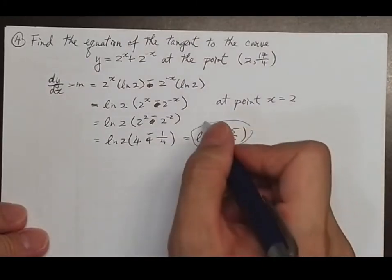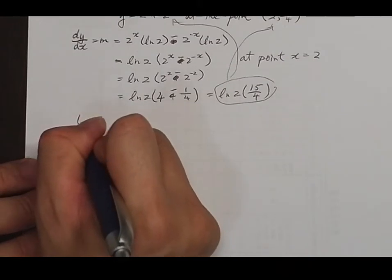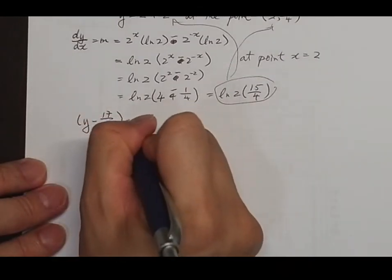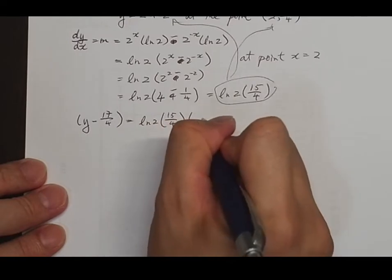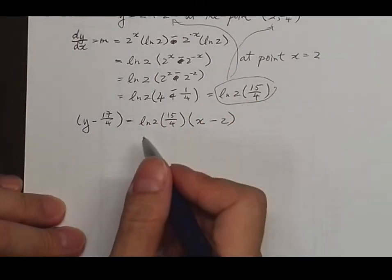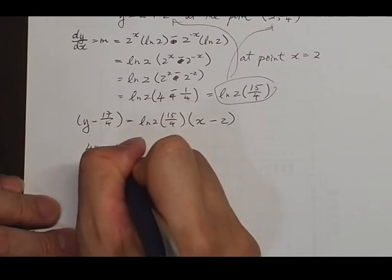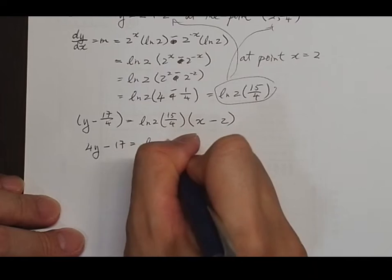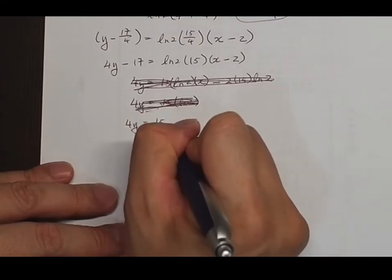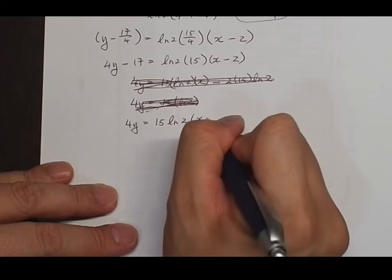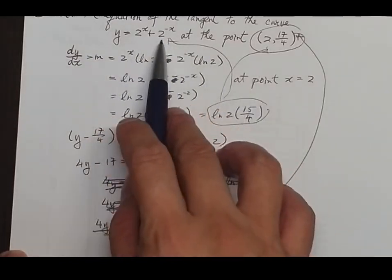Using the point-slope form, we get y minus 17/4 equals (log 2 · 15/4)(x minus 2). Multiplying both sides by 4: 4y minus 17 equals 15·log 2 · (x minus 2), and rearranging gives the equation of the tangent at this point.